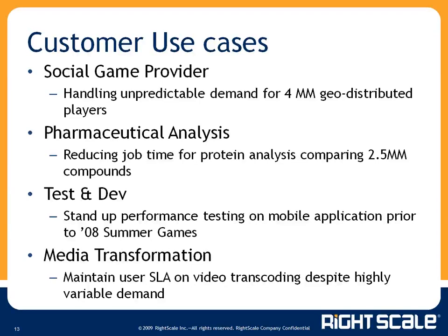The next use case we see a lot in financial services and pharmaceutical sectors is grid and batch computing. These companies have finite resources in their internal data centers with little transparency on job completion timing. In the cloud, you have a neutral cost equation: spinning up 1,000 servers for one hour costs the same as 100 servers for 10 hours. For a pharmaceutical company bringing a drug to market, the time saved in the R&D pipeline can be worth hundreds of millions of dollars.